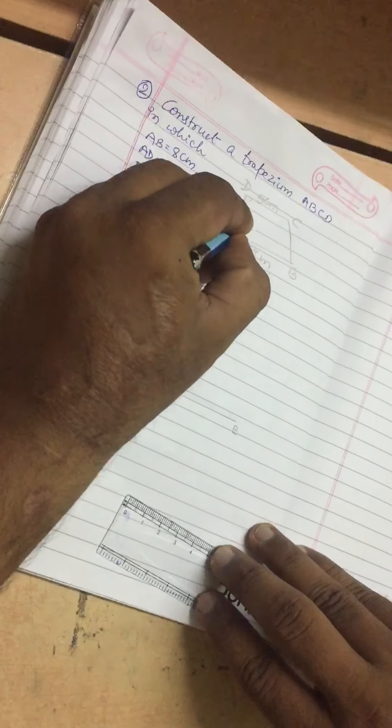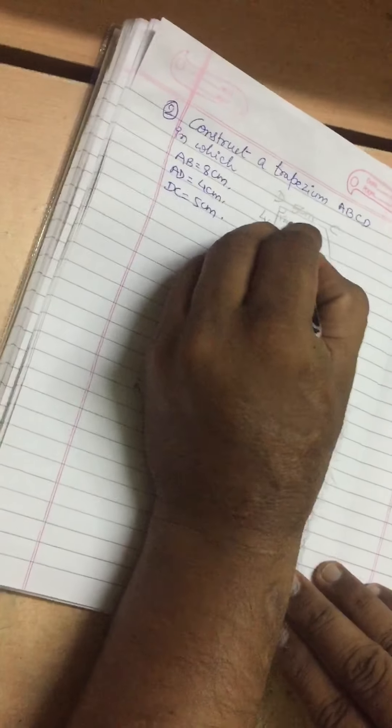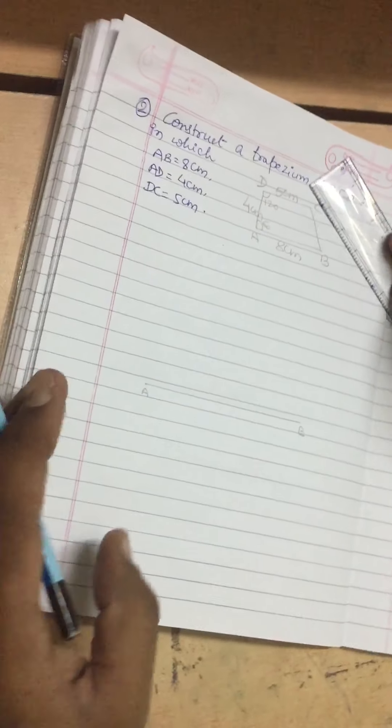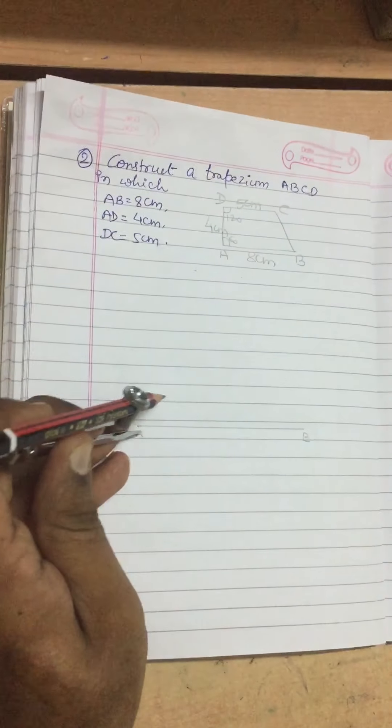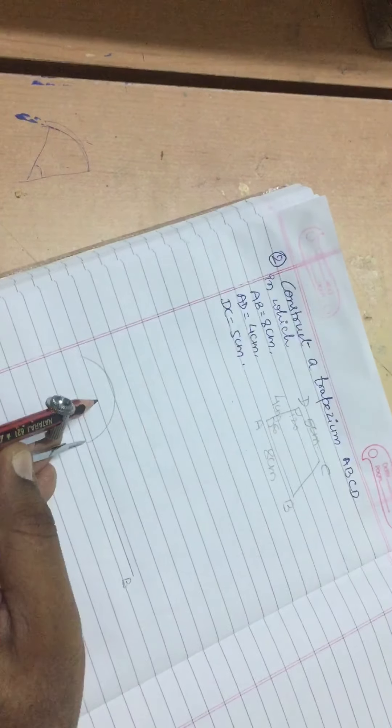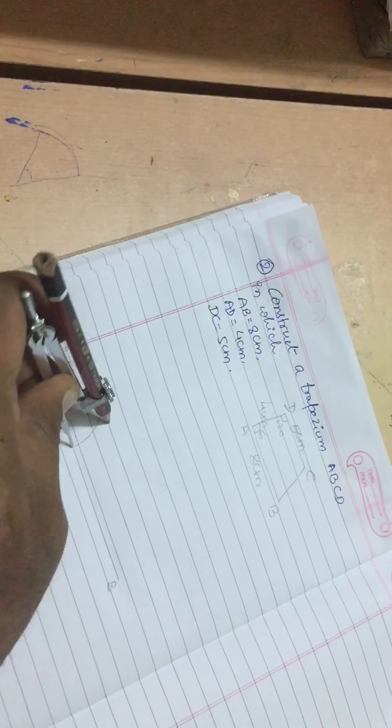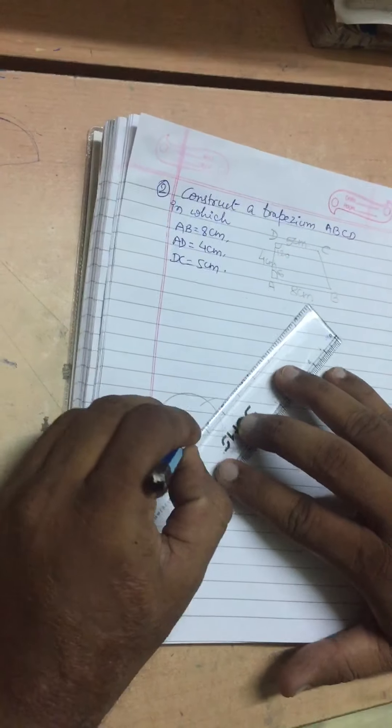Now I will go with 60 and 120 degrees because these are very easy to construct. First I will open the compass and cut an arc of any size. Then the first arc, that is 60 degrees. I am extending the line.